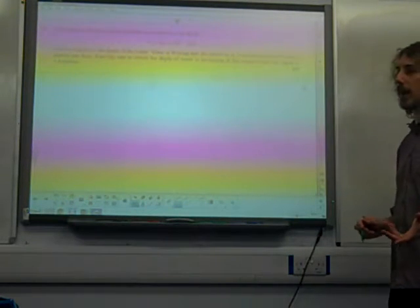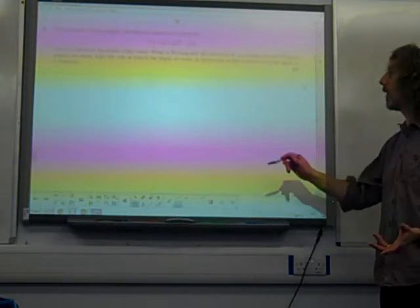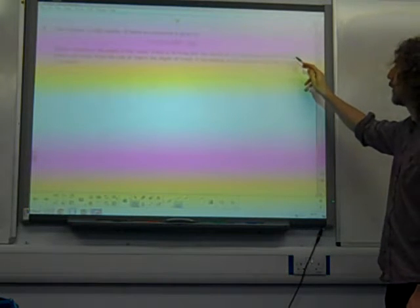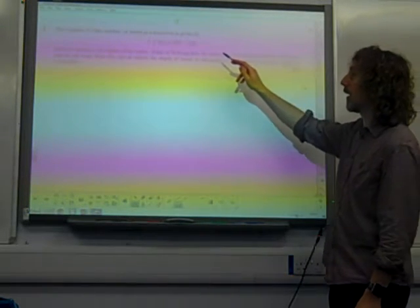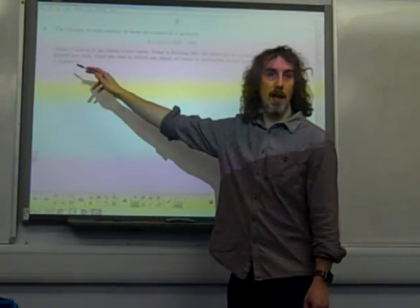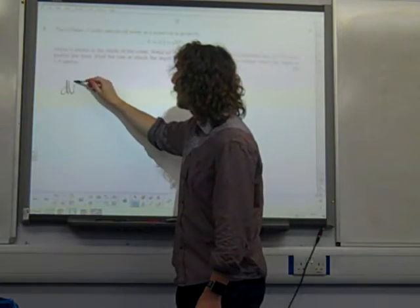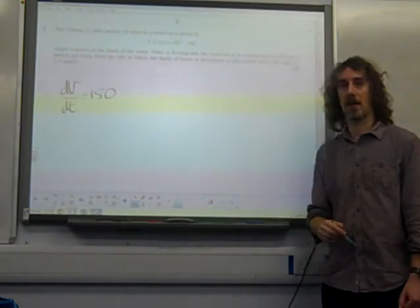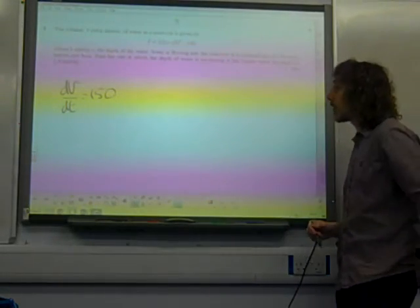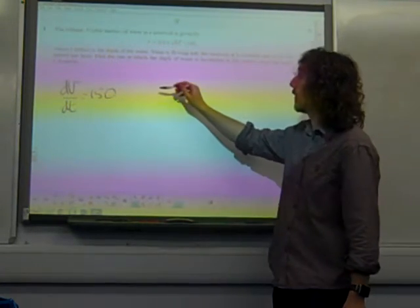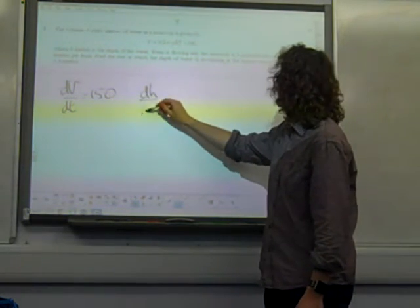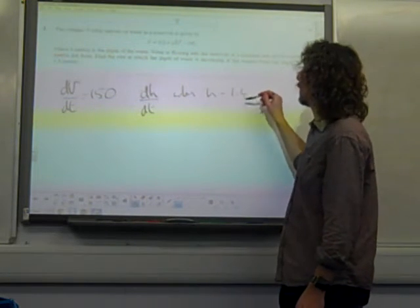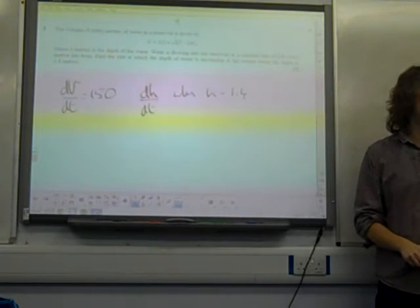Well actually, let's write down to start with what we've just been told. Here we've got the water is flowing in at a constant rate of 150 cubic metres. So that's volume per hour, that is dV by dt is 150. That's what we've just been given. What's the question looking for? Find the rate at which the depth is increasing. So we want dH by dt when H is 1.4. This is what we're after in this question.